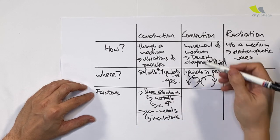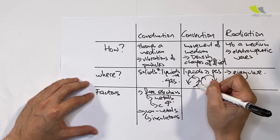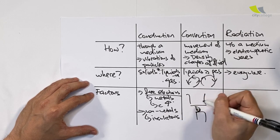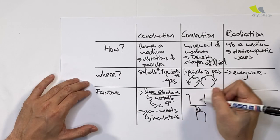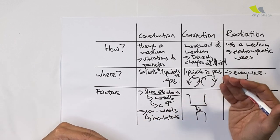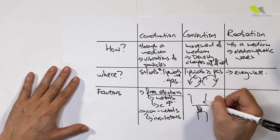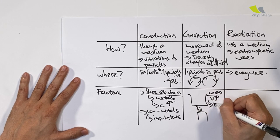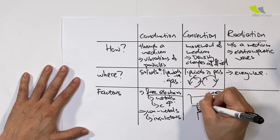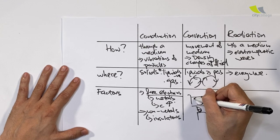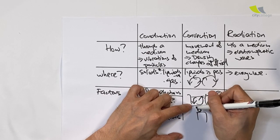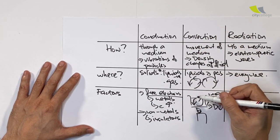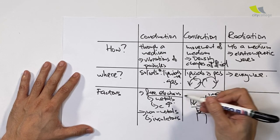For convection, the key factor is density. The part of the fluid near the heat source receives heat first via conduction. As it receives heat, particles move faster, gaining kinetic energy, expand into a larger space, and volume increases. The mass remains the same, leading to a reduction in density. The heated fluid or gas then floats upwards, and cooler fluid comes downwards to reach the heat source again. This process repeats, creating a convection current. The key factor affecting convection is the location of the heat source.